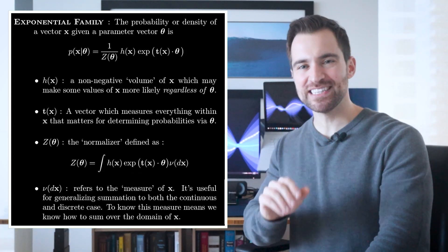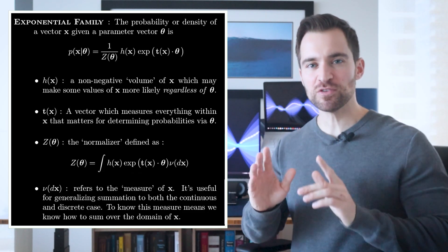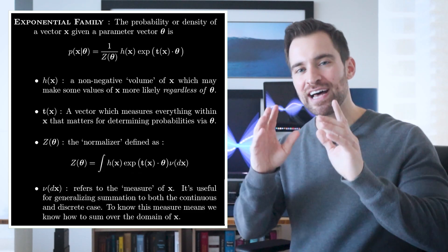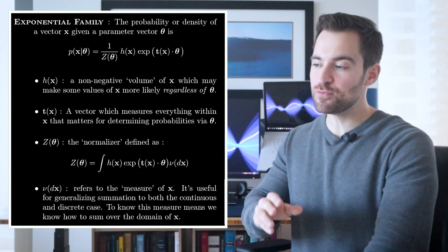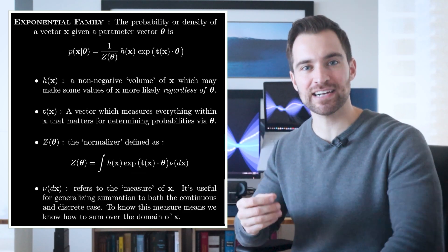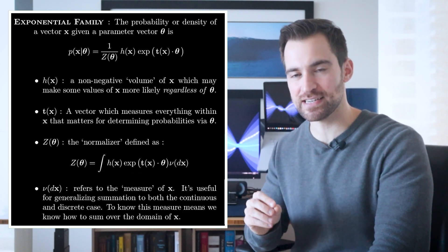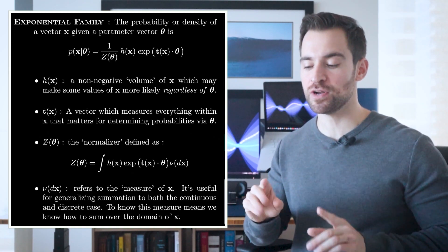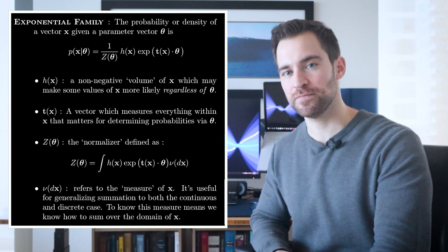All right. So that was a head full. Let's take a step back. The exponential family is a generalization in which a lot of distributions live. That means if we make choices for h of x and t of x, and we know how to sum over the domain of x, then we'll get a specific distribution, probably one that we've seen before. In fact, let's go over the choices made to get to the normal.